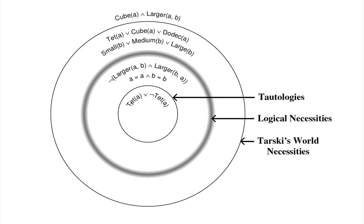A necessarily true sentence is a sentence that is always true — it is true in every possible instance that it can manifest. When we're talking about a tautology, we're talking about a sentence that is true on every row of the truth table in the column under the main connective.